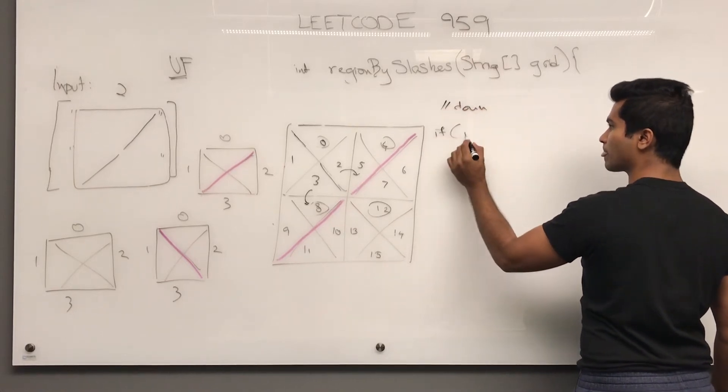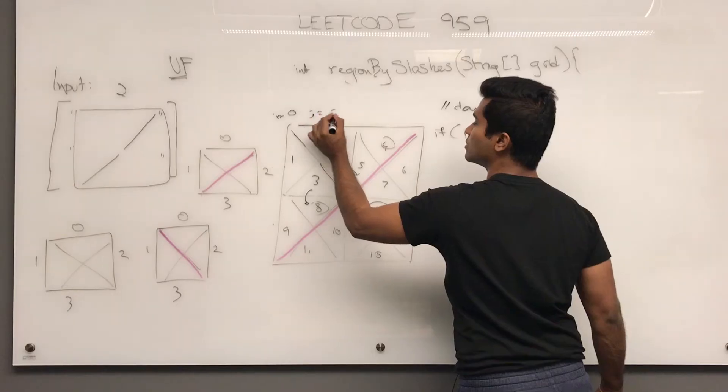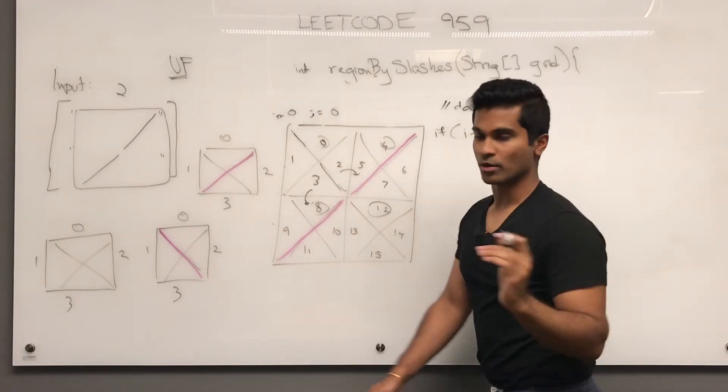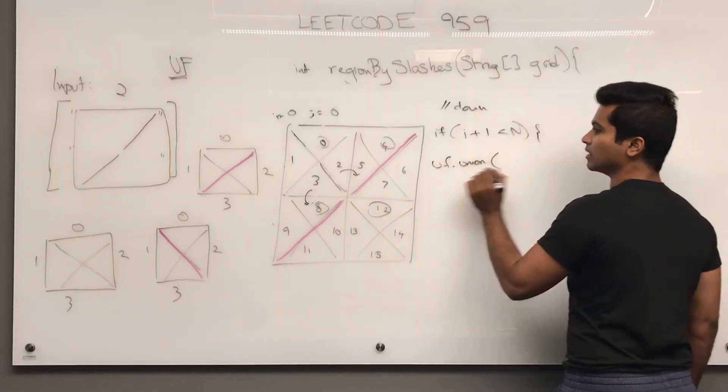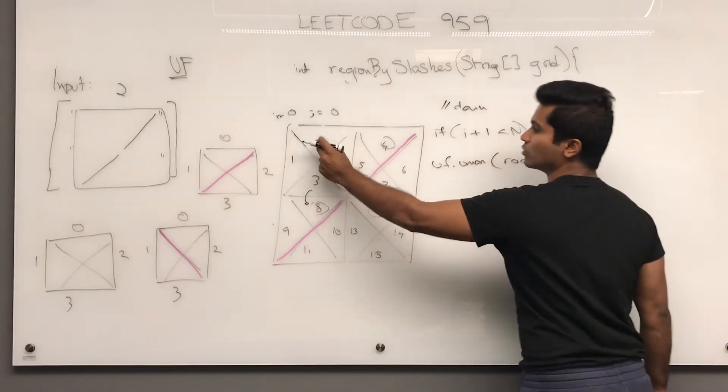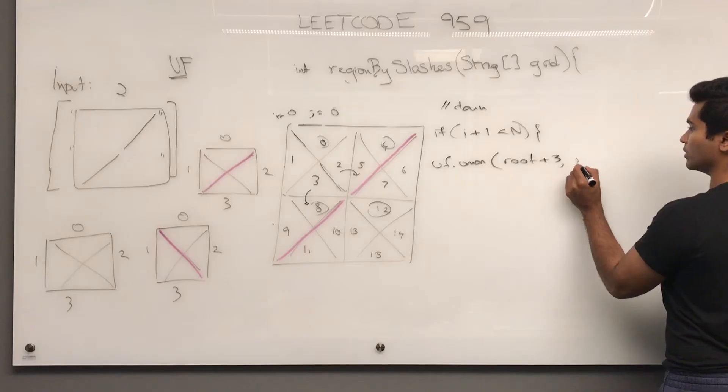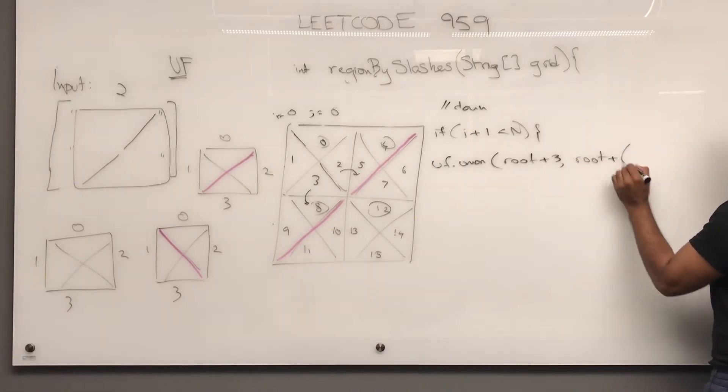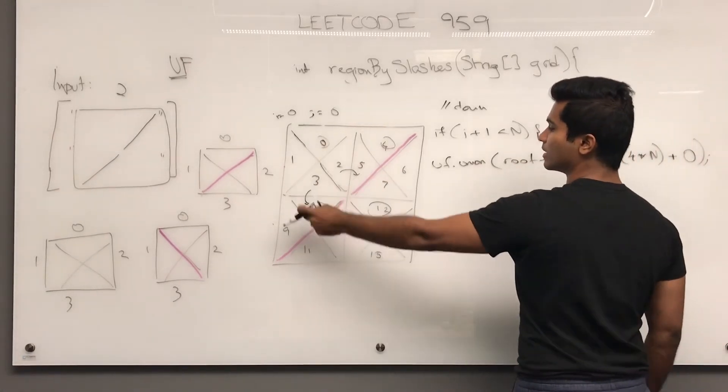So what we do is first check down below, if i plus 1 is less than n, which it is, because this is i equals 0, j equals 0, 0 plus 1 is 1, which is less than 2. uf dot union, let's see, 3, right? So root plus 3, because this is root, and we go here, then we want to get to this one. So how do we get to that one? We're going to do root plus 4 times n, and then we're going to add 0. We don't have to add anything, but this is pretty much saying, how do I get to here?